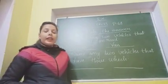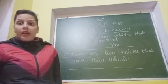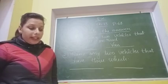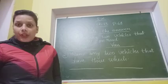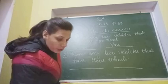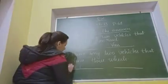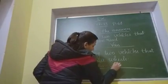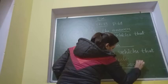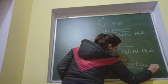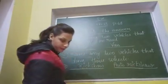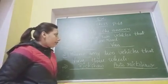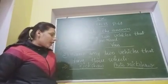Next is: Name any two vehicles that have three wheels. What are the two vehicles that only have three wheels? We have to name the vehicles that have three wheels. That is Auto Rikshaw and Rikshaw. So note that answer: Rikshaw and Auto Rikshaw.